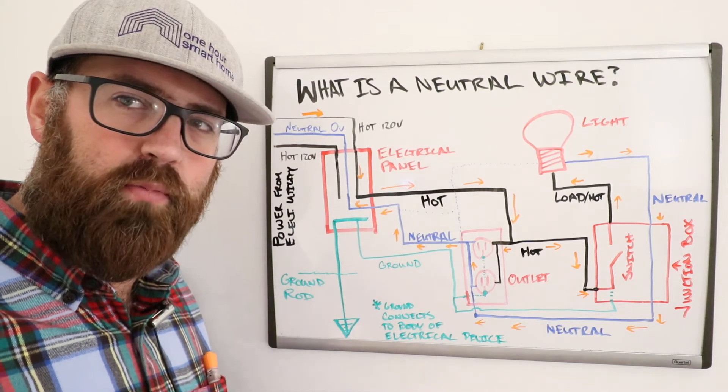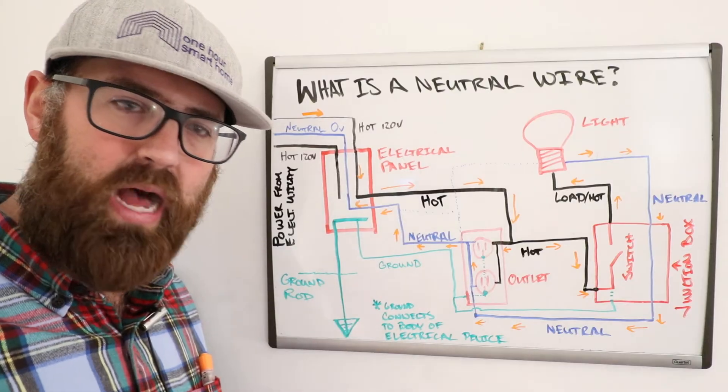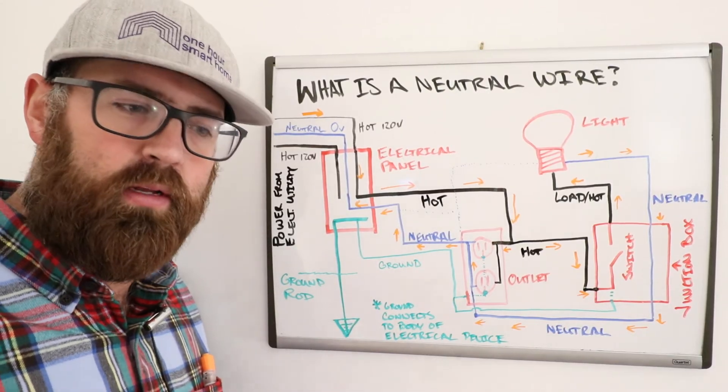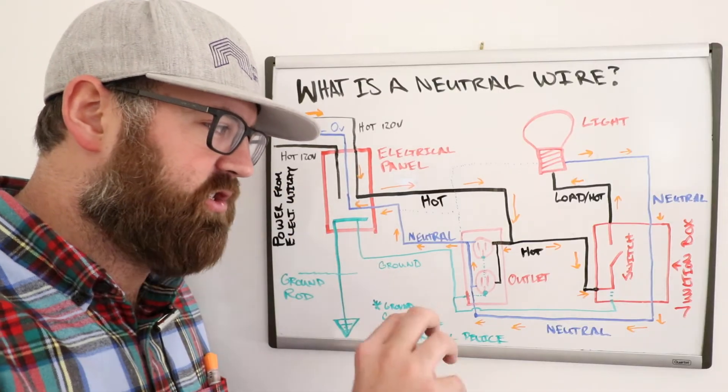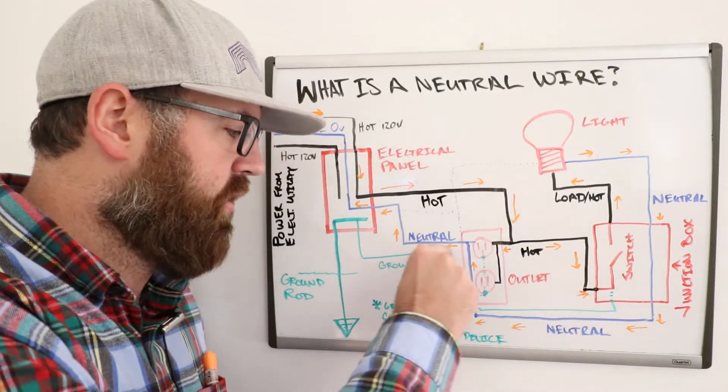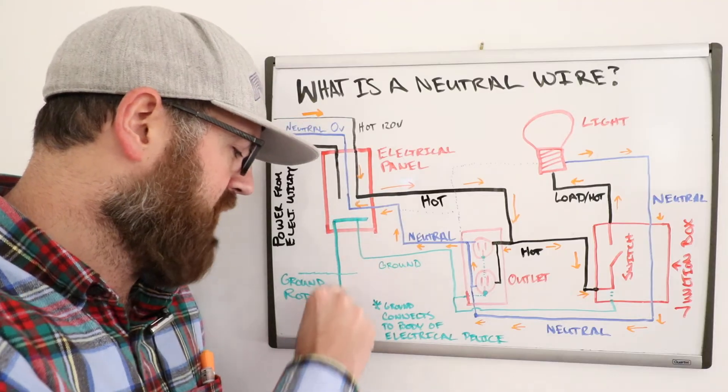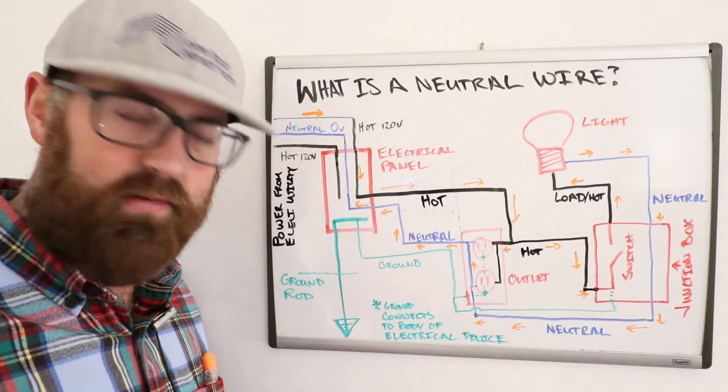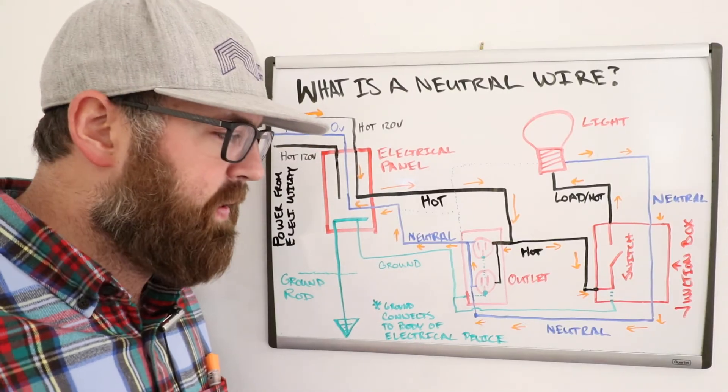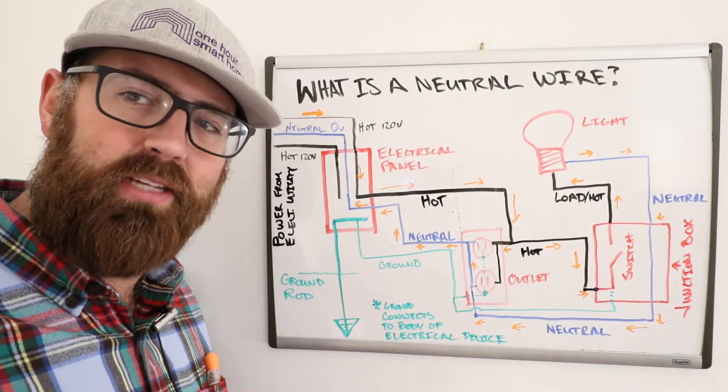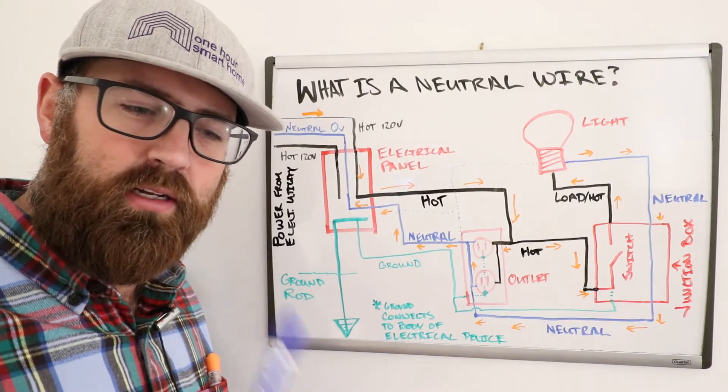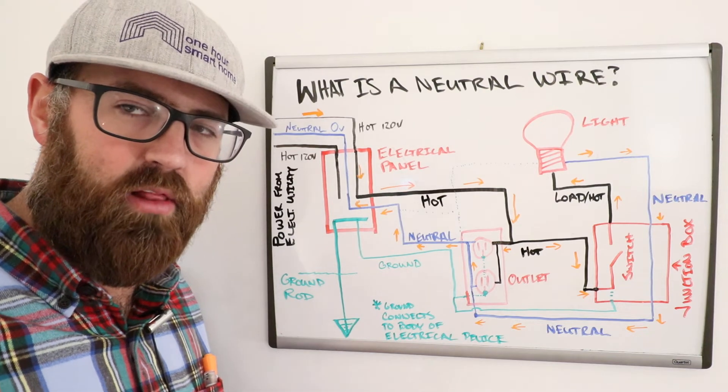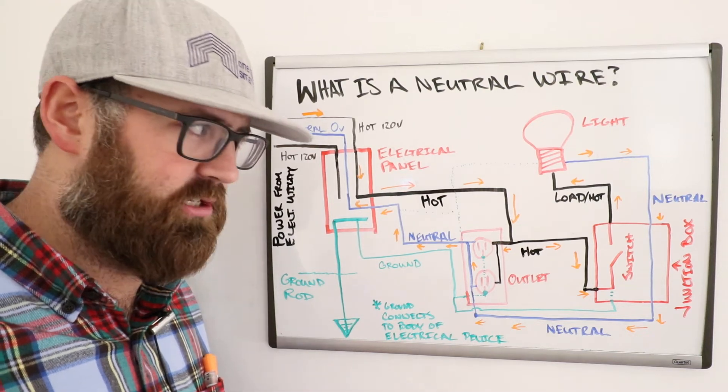What the ground wire does is electricity travels in the path of least resistance. The ground wire provides less resistance than your body, which means that if that device, even if it's shorting out, that power, that energy is going to go back through the ground wire, back through here all the way to the electrical panel and down to the ground rod, which is a rod, literally usually driven down into the ground. Sometimes it's a pipe, sometimes it's a rod. That ground wire is protecting you from getting shocked because it has less resistance than your body and electricity wants to follow the path of least resistance.